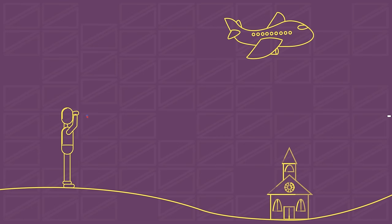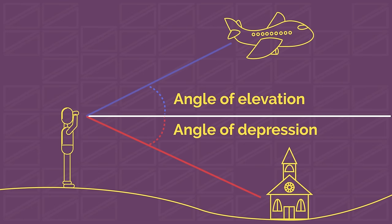An important part of useful trigonometry are angles of elevation and depression. If you're standing and looking up at an object, the angle from your horizontal line of sight up to the object is the angle of elevation.